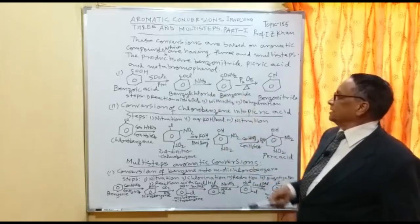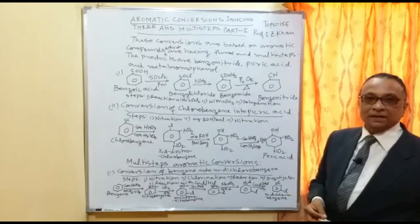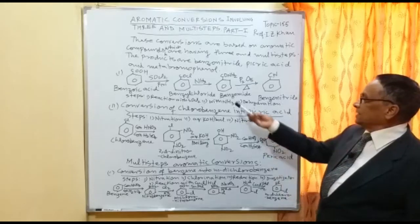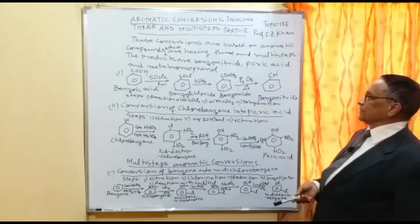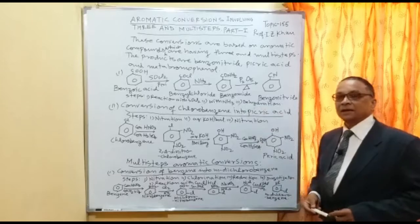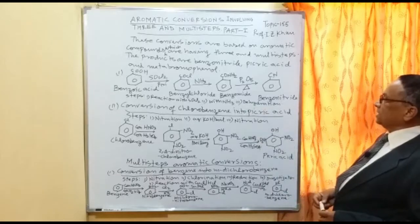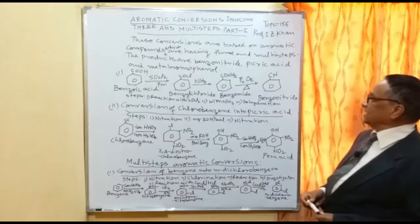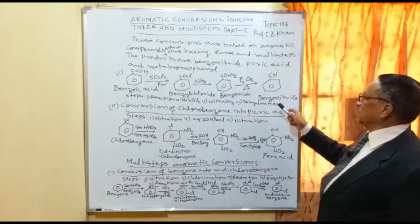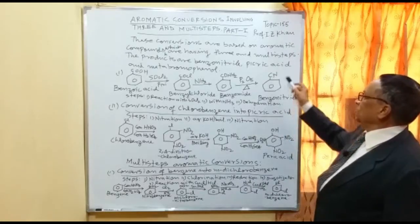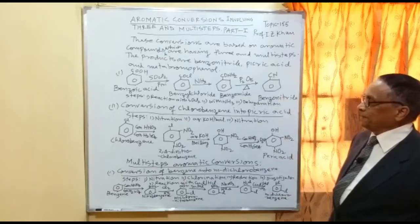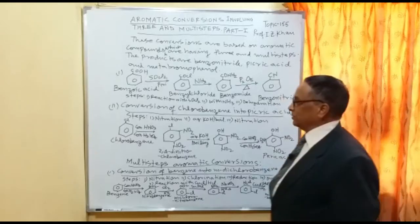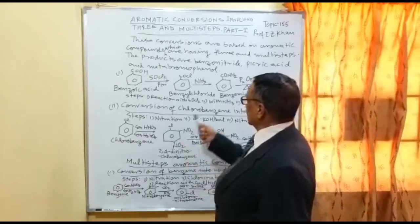Then it is treated with ammonia (NH₃), it is converted into benzamide. Then phosphorus pentoxide and heating will give you benzonitrile, where the CN group will be attached. That completes conversion number one.